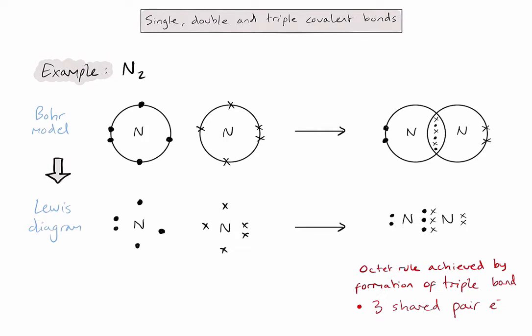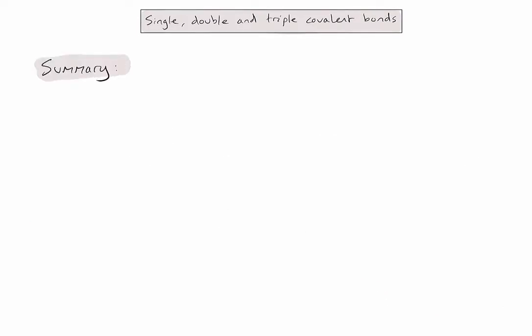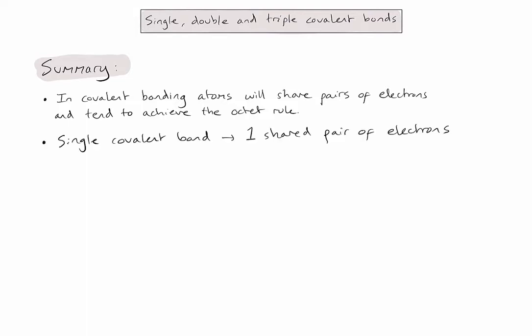Let's now summarize the key points in this video. Firstly, in covalent bonding, atoms will share pairs of electrons and tend to achieve the octet rule. Remember that there will be some exceptions to this. When atoms share just one pair of electrons, we call it a single covalent bond. When two pairs of electrons are shared, we call it a double bond. And of course, with three pairs of electrons, we'd call it a triple covalent bond.